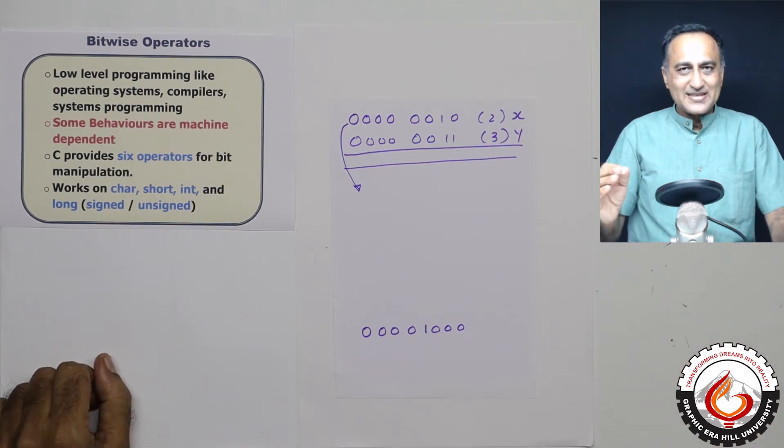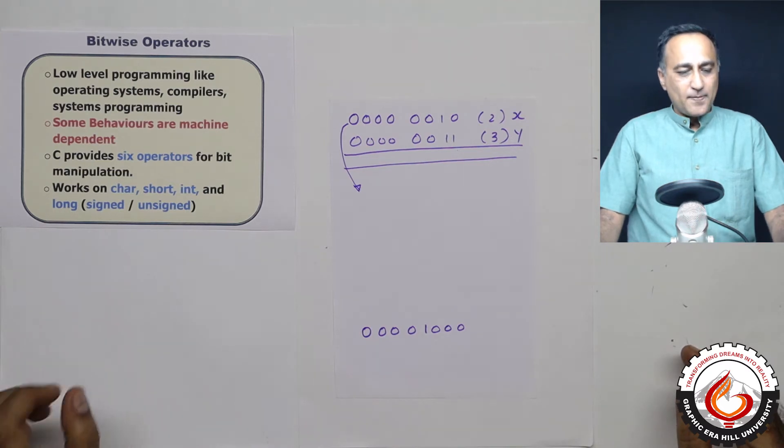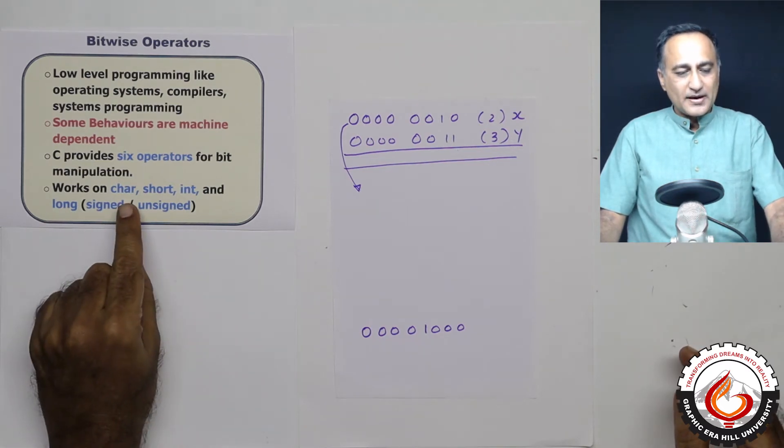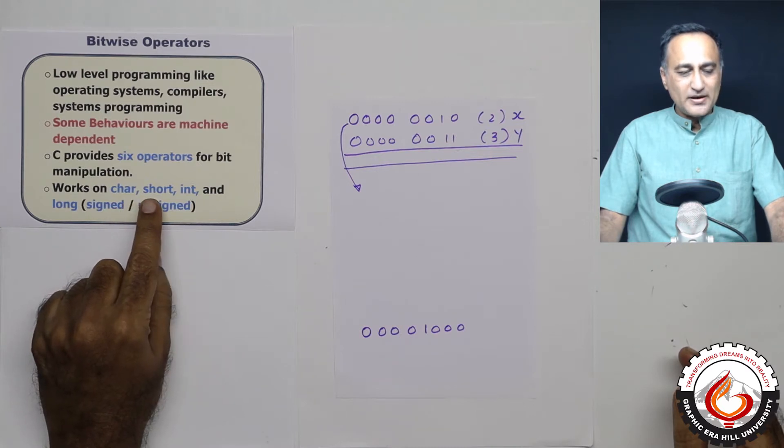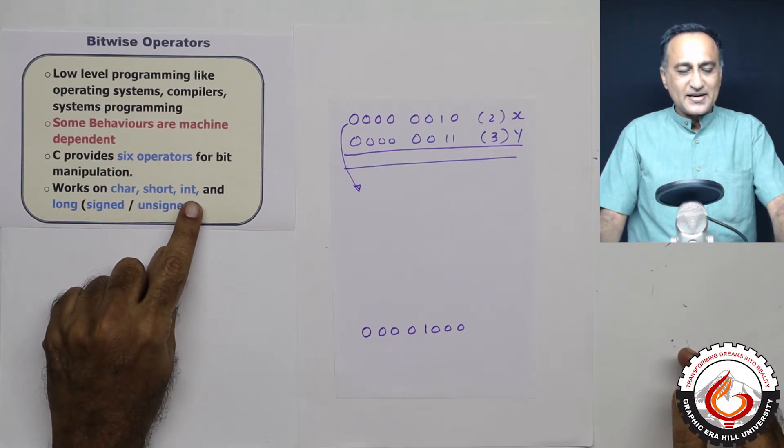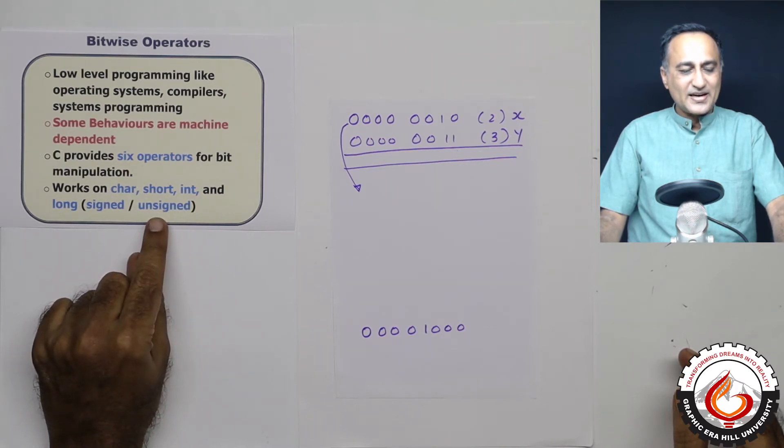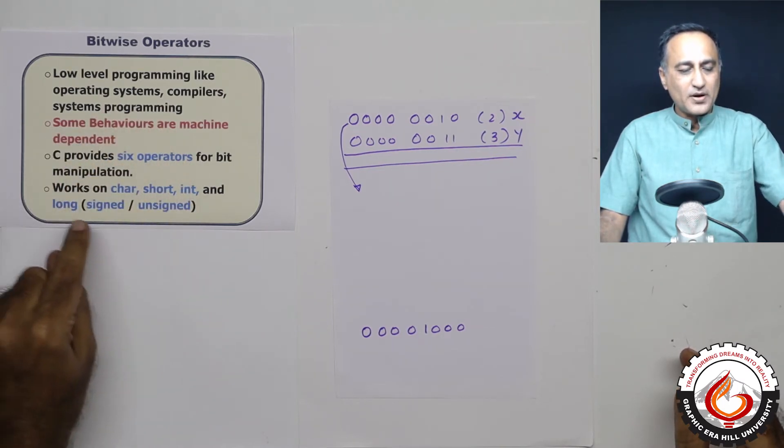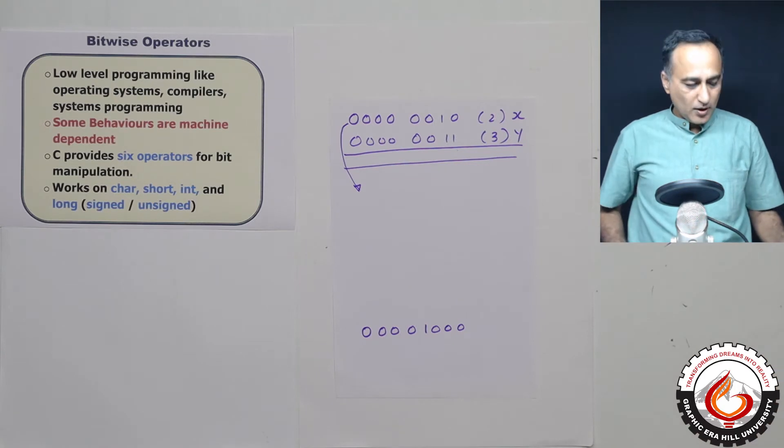C has six operators for bit manipulation. These operators work on character type data, signed character, unsigned character, short int, signed int and unsigned int, and long signed as well as unsigned. This is the area where the bitwise operators are going to work.